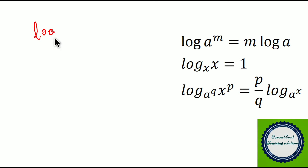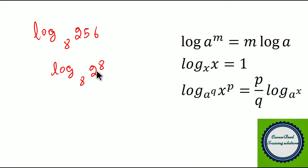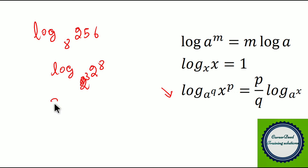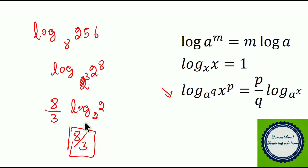Question number 3: log of 256 to the base 8. We write 256 as 2 power 8 to the base 8, and 8 can be written as 2 cube. This is in the format of our last property: log of X power P to the base A power Q equals P by Q into log X to the base A. So instead of P we have 8 and instead of Q we have 3, giving 8 by 3 into log 2 to the base 2. Since log 2 to the base 2 equals 1, the answer is 8 by 3.